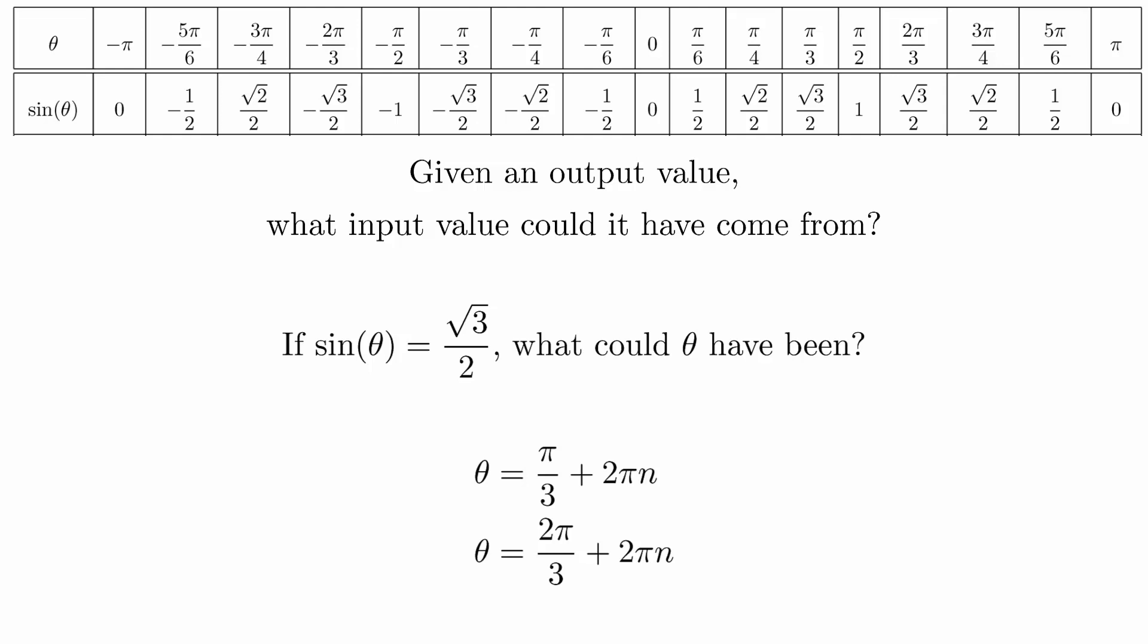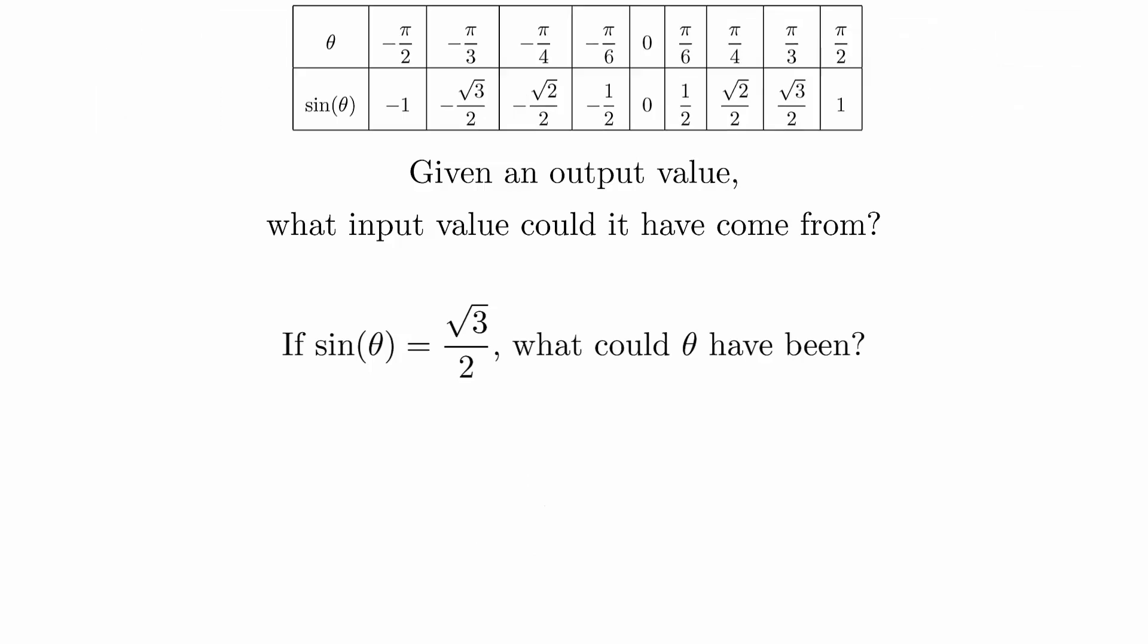This means that the inverse isn't going to be a function unless we restrict the range. In this case, it turns out that the interval from negative pi over 2 to pi over 2 is the natural choice. So when we ask what is the inverse sine of the square root of 3 over 2, the answer will be pi over 3.